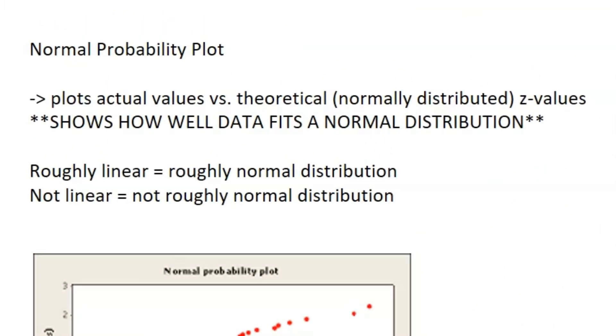Alright, so the final thing I'm going to talk about is super niche, but I'm still going to include it because it's on the CD. That's a normal probability plot. So what it does is it plots the actual values versus the theoretical z values. So these theoretical z values are the z values you would get if the actual data points were normally distributed.